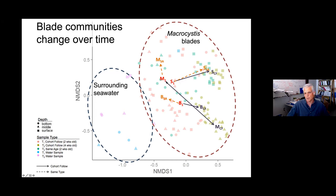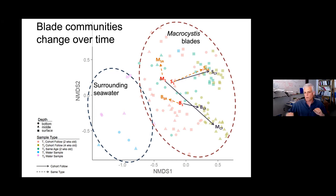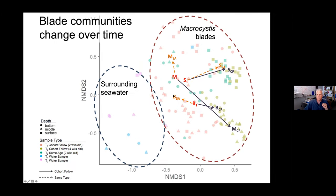Going deeper in the water column, the cohort is very different from two weeks later — it seems to take hold and go along a trajectory to a community very different from a two-week-old blade. The basic idea is that assemblages found in the mid water and bottom water seem to follow a trajectory of community assembly that is potentially different every time, as a cohort develops on the mid and bottom fronds and may take a different trajectory over time.